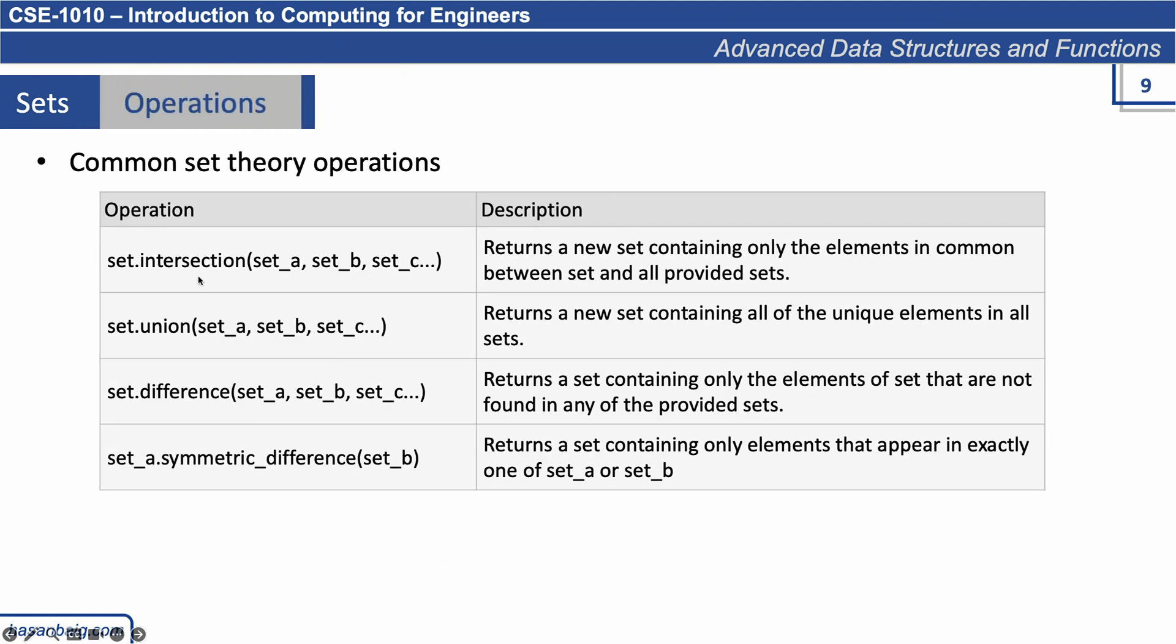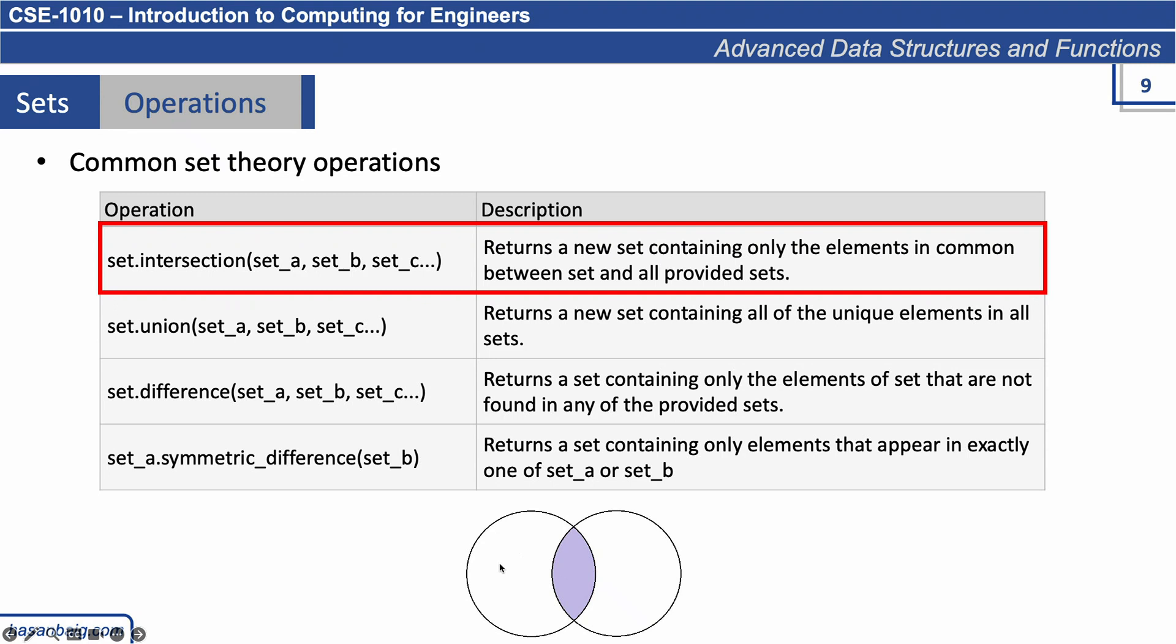Common set theory operations: intersection returns a new set containing only the elements in common between sets. You run set.intersection on a set with other multiple sets like set_a, set_b, set_c. If you have one set and another set, only the elements that are common to both will be returned.